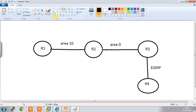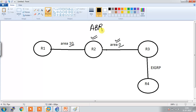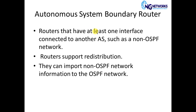In this scenario, R2 is a router connected to two different areas: area 10 and area zero. The first condition is satisfied — it is connected to multiple areas and one of them is area zero — so this router becomes an ABR. Simply put, if a router is connected to multiple areas and at least one area is area zero, that router is your ABR, or Area Border Router.